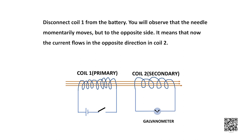Disconnect coil one from the battery. You will observe that the needle momentarily moves but to the opposite side. It means that now the current flows in the opposite direction in coil two. Coil one is called the primary coil and coil two is called the secondary coil. As the current in the first coil changes, the magnetic field associated with it also changes. Thus the magnetic field lines around the secondary coil also change. Hence the change in magnetic field lines associated with the secondary coil is the cause of induced electric current in it.